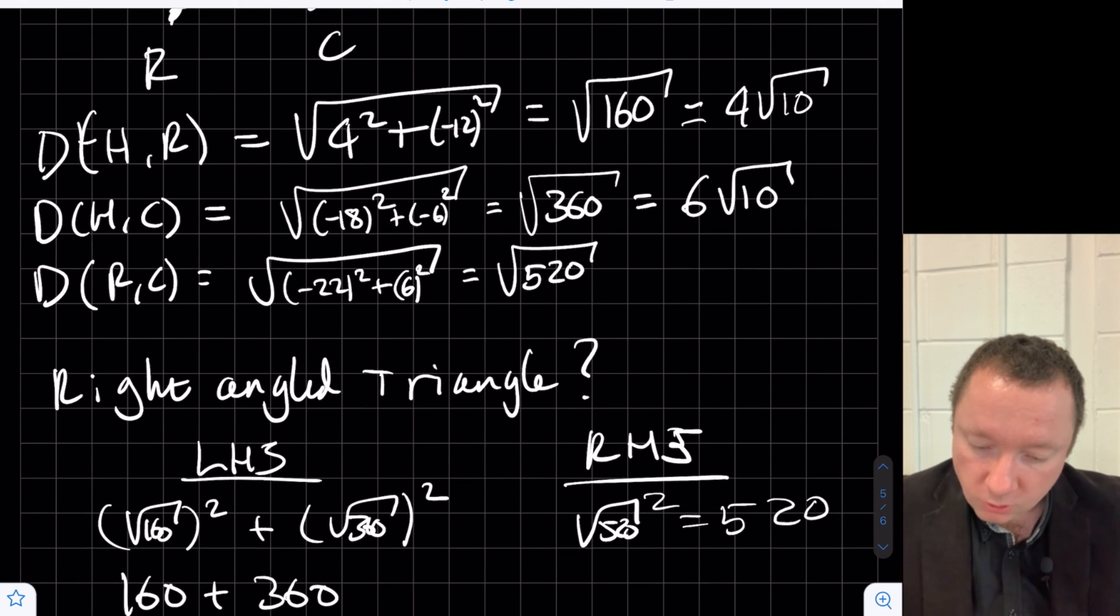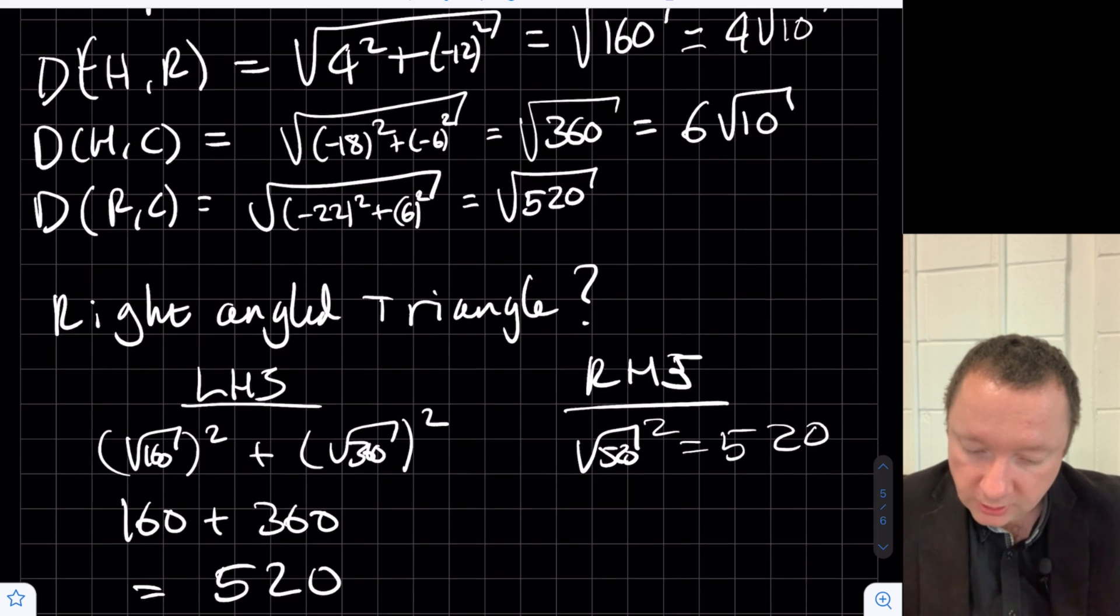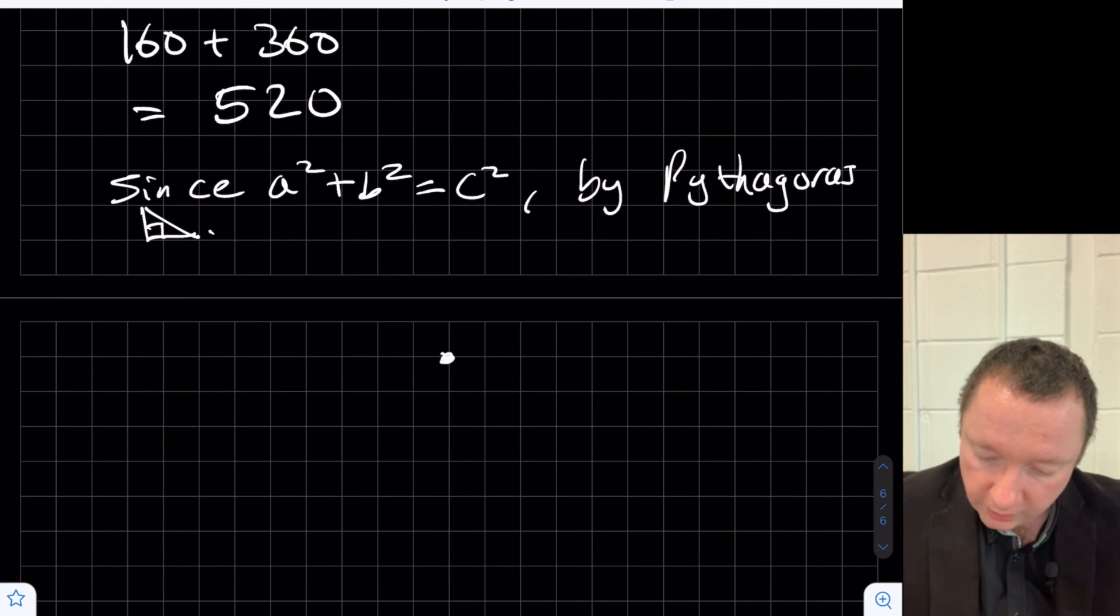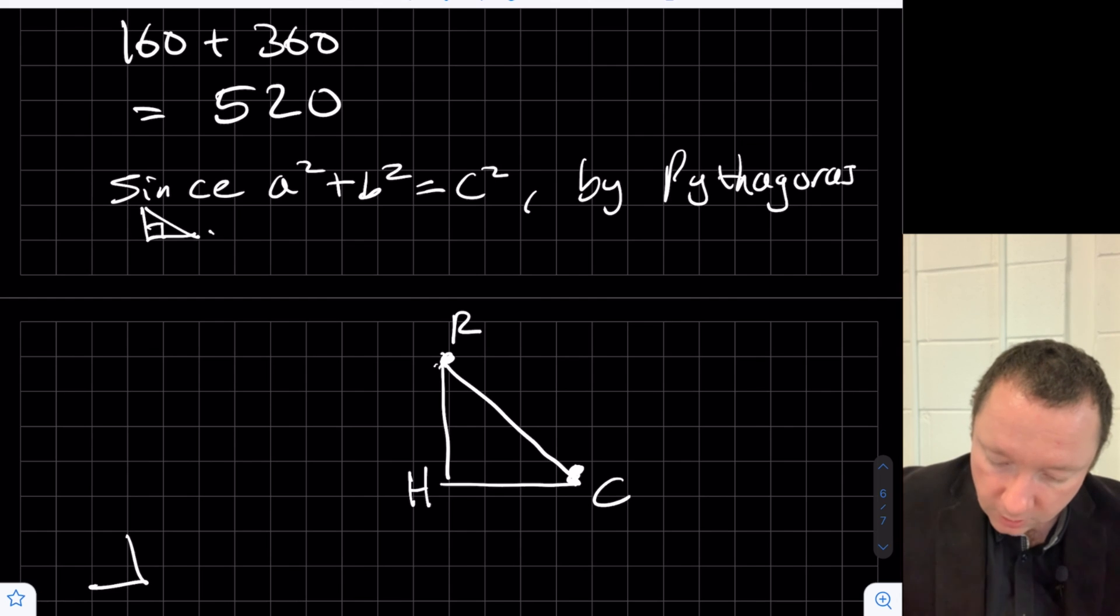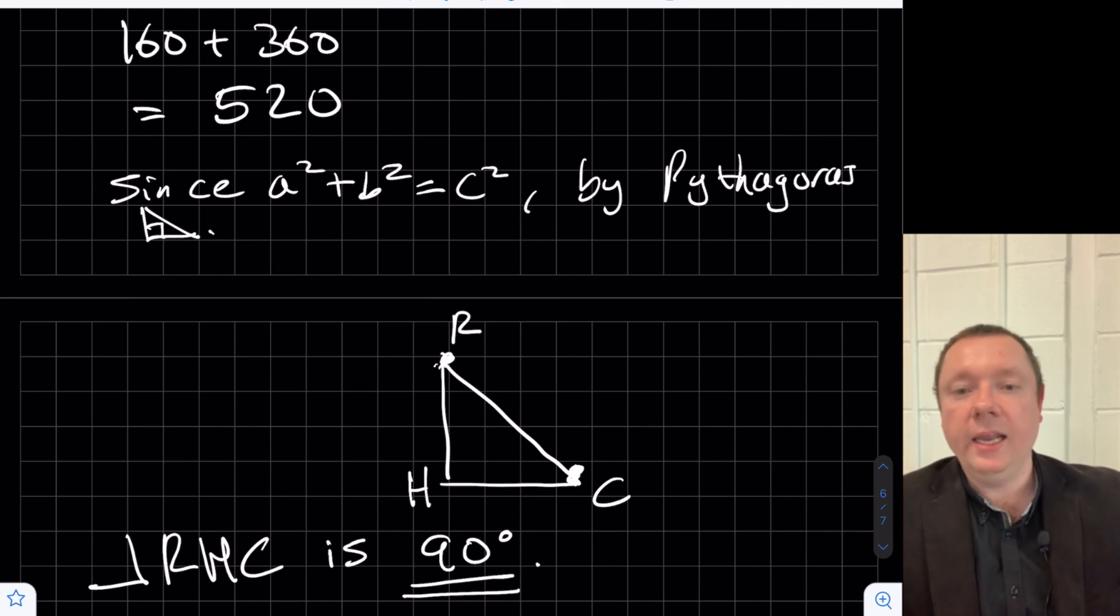Well, we can now draw our picture. We know that R to C is the longest side. So if I just draw that's R and that's C, that's the longest side. So H is here. So angle RHC is 90 degrees. Or CHR.